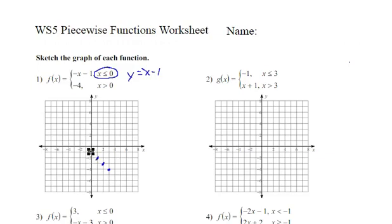These points will actually not be on that piece, so let's start reversing the direction here. Instead of going down one, right one, we can go up one, left one. So for this piece of our function, I'm going to draw the line for negative x minus one, or y equals negative x minus one, but only where x is less than or equal to zero.